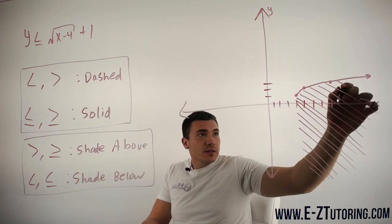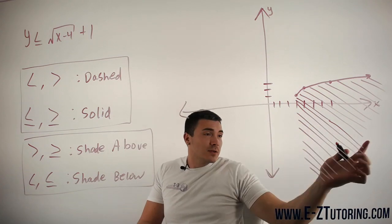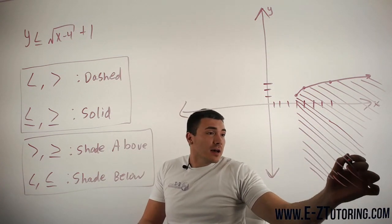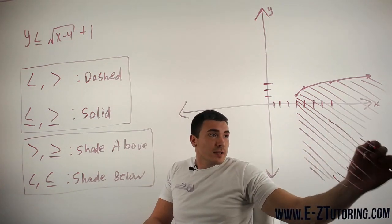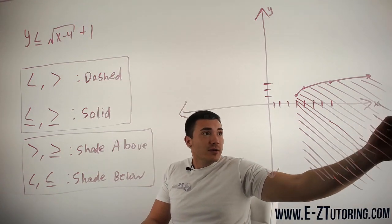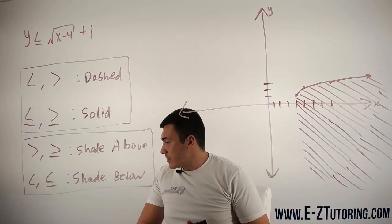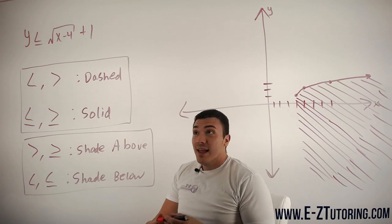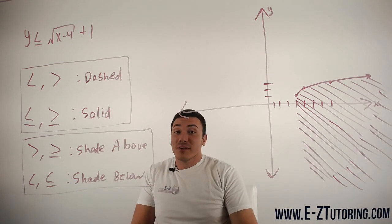And of course, the shading will go off towards the right forever because we have this arrow towards the line. So it will go on forever. So this right here is your solution to the inequality. And that is how you graph square root inequalities.